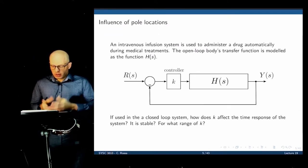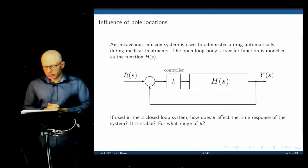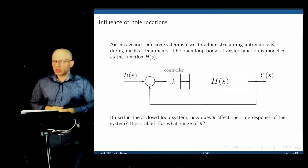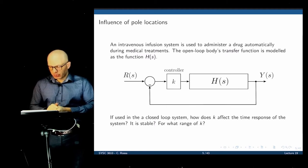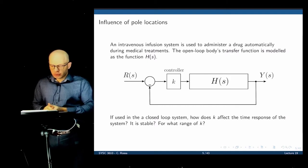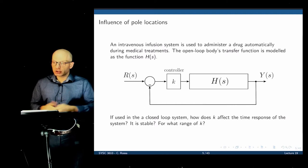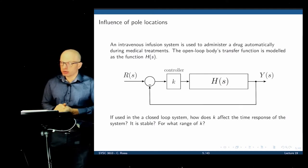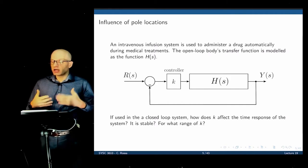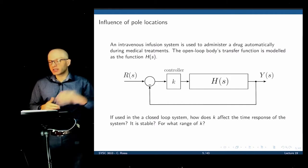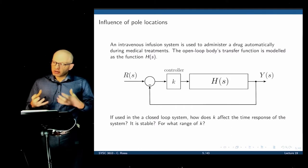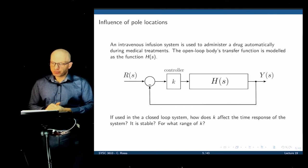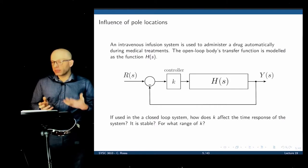Here's another example: we have a transfer function H of S, and we are developing a proportional controller K for it. This represents a drug infusion system to control the amount of drug in the body. If parameter K changes, how does that affect the response? In this particular example, we want to limit overshoot — we don't want the drug level to go beyond a certain value before it settles. What is the limit of K that gives no overshoot, overshoot, or even makes the system unstable?